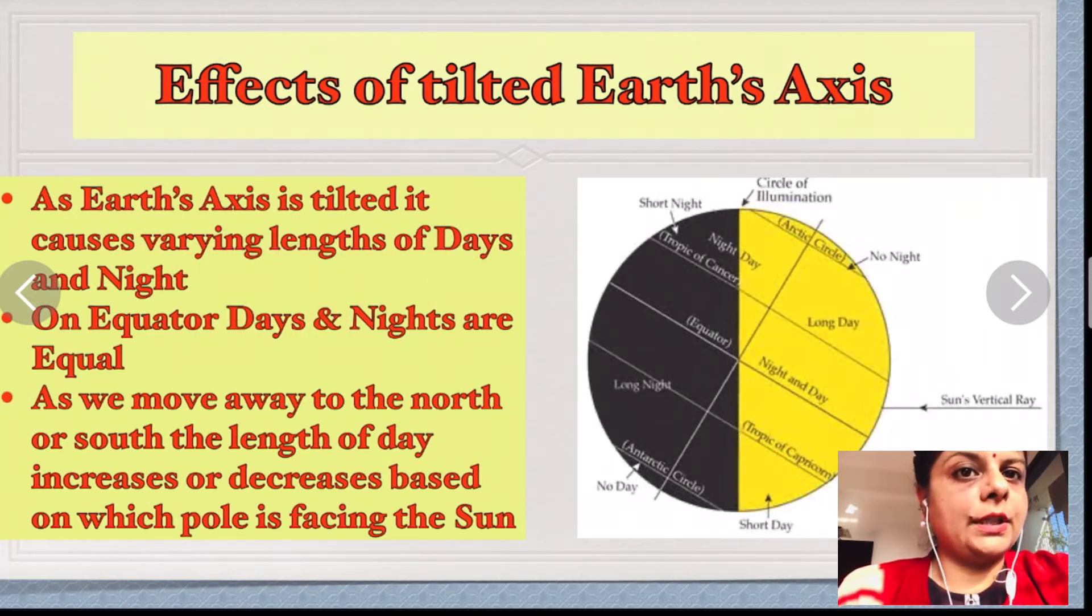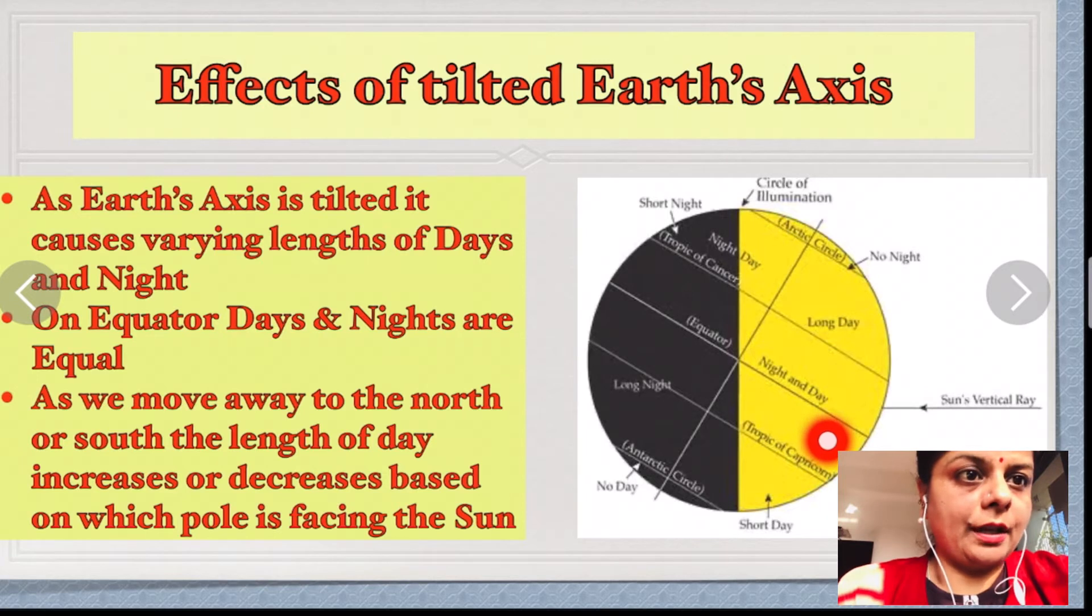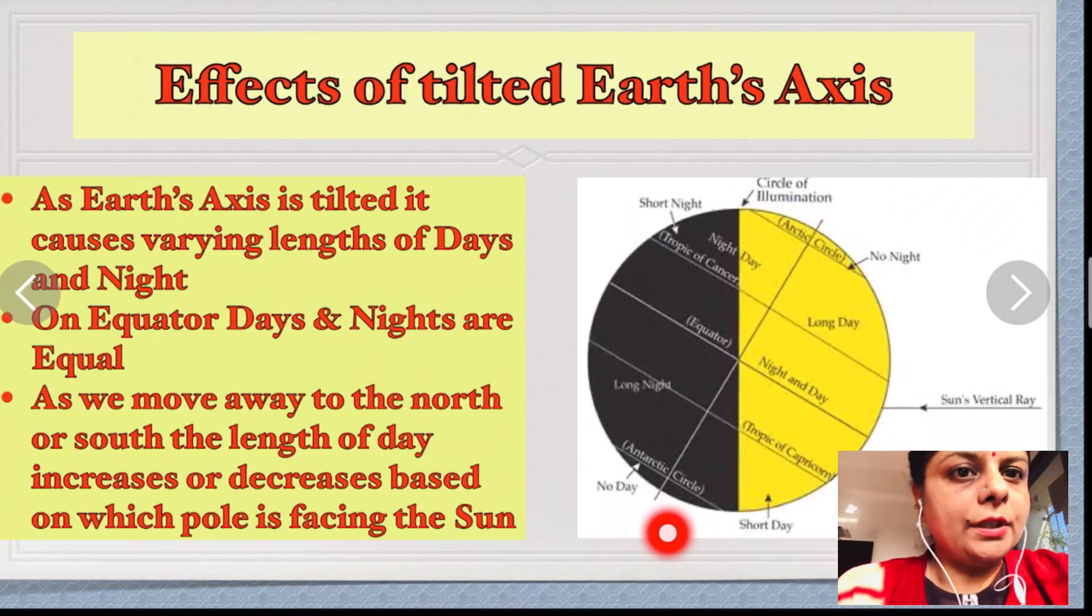Just at the equator they are of equal length. As we move away to the north and south, it keeps on decreasing and increasing. Let's see here, the line shows that on the equator the length of day and length of night is equal.